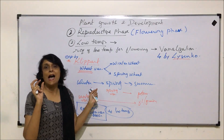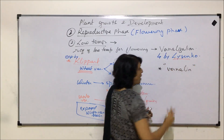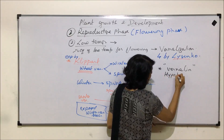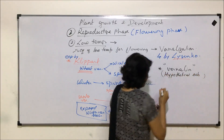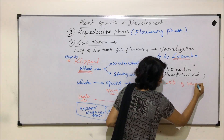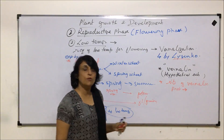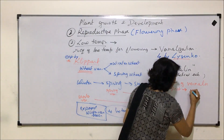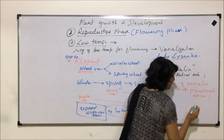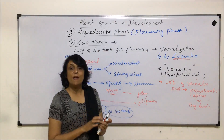Similar to florigen for flowering, vernalization also has a hypothetical substance which is known as vernalin. Again, we call it hypothetical because scientists have not been successful yet in isolating it. The site where vernalin is produced is the meristematic cells — it could be the apical meristem or the leaf bud, since the bud also has meristematic tissue.